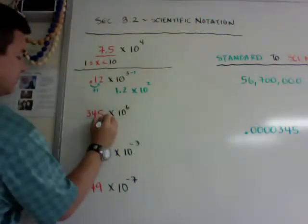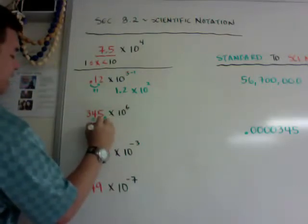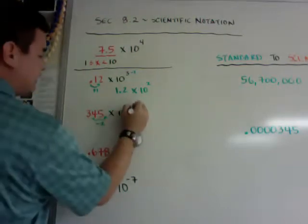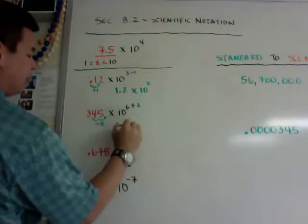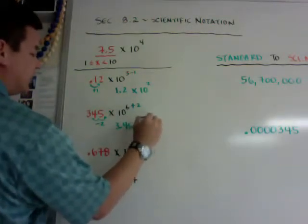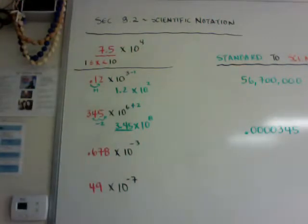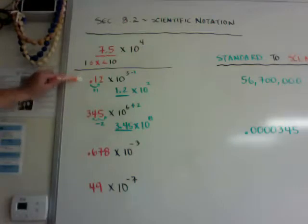Over here, if my decimal is here and it's too big, I'm going to go this way. So I minus 2 this way. Whatever I minus here, I need to add to this one. So it's going to be 3.45 times 10 to the 8th power. Now this number has only 1 number left of the decimal. That's what happens with the positive exponent.